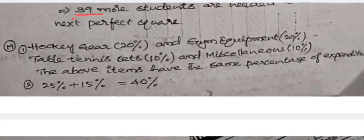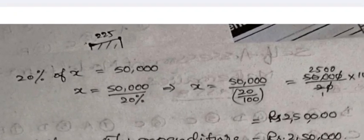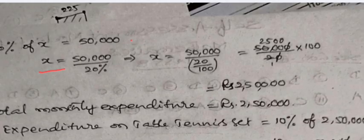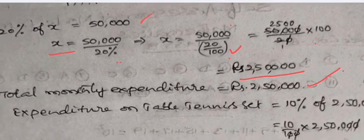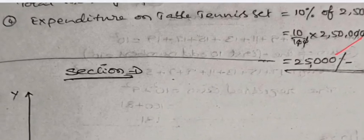Pie chart sports academy solution: Hockey gear is 20% and gym equipment is 20% — these two have the same percentage. Table tennis sets 10% and miscellaneous 10% are also equal. Basketball kits plus swimming equipment is 25% + 15% = 40%. If 20% of total expenditure x equals 50,000, then x = 50,000 ÷ (20/100) = 2,50,000. Total monthly expenditure is ₹2,50,000. Expenditure on table tennis sets is 10% of ₹2,50,000 = ₹25,000.